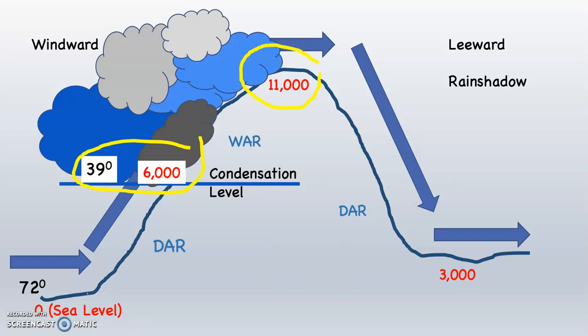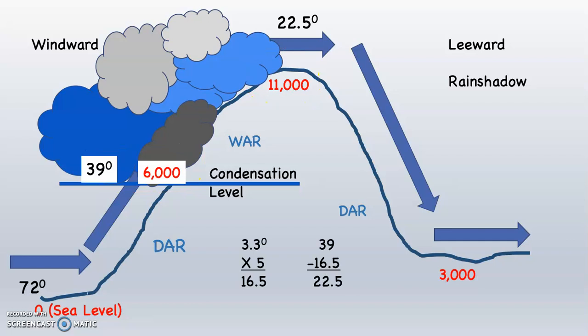Next part. The air continues to rise up the windward side of the mountain, going from 6,000 up to 11,000 feet — that's 5,000 feet. Now we multiply by the WAR because there's a cloud forming, and clouds mean 100% relative humidity. We take 3.3, the wet adiabatic rate, times 5 for 5,000 feet — 3.3 times 5 is 16.5 degrees. Then we take 39 degrees, the temperature at 6,000 feet, and subtract 16.5. 39 minus 16.5 is 22.5 degrees. So at 11,000 feet, the temperature of that rising parcel is 22.5 degrees.